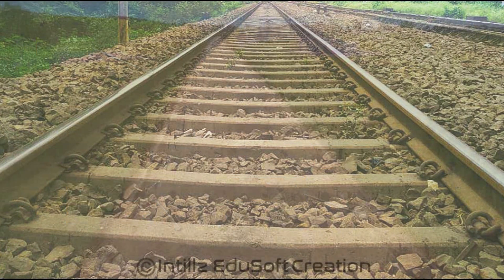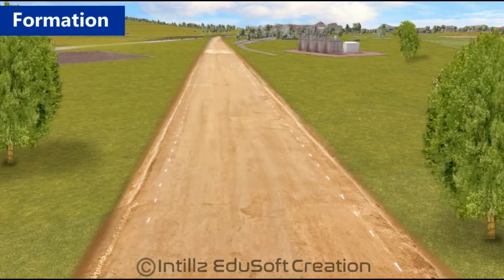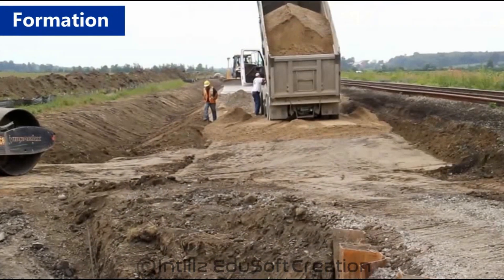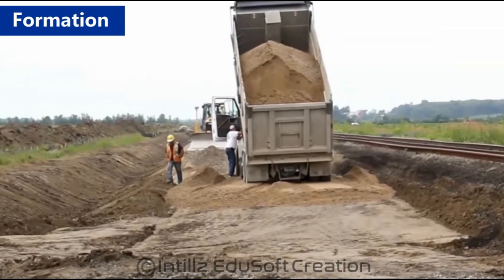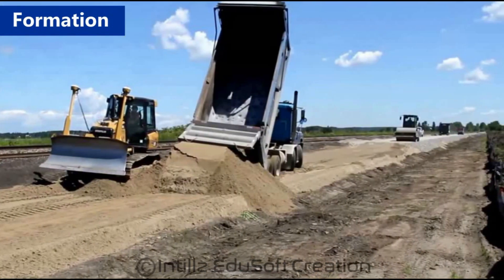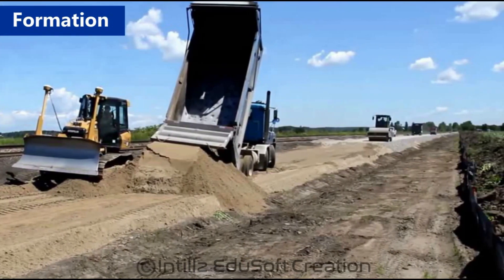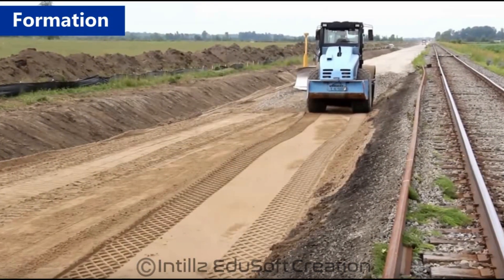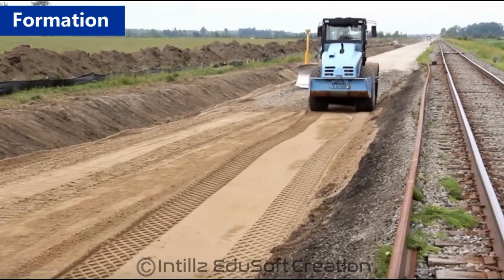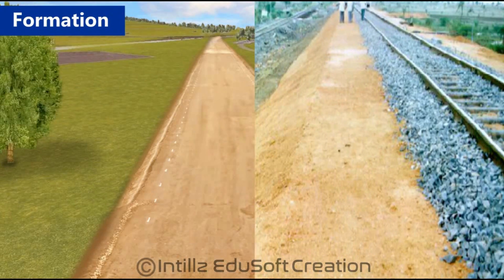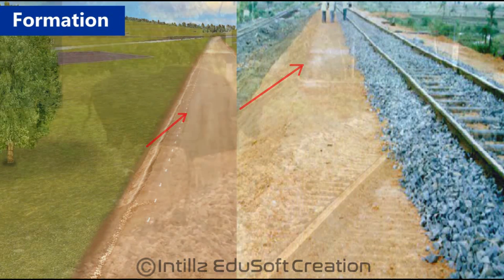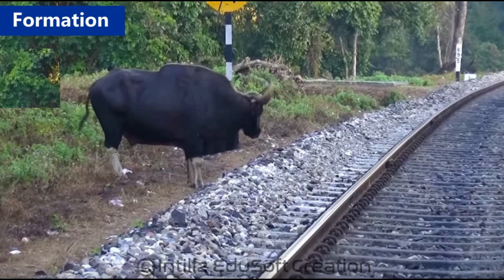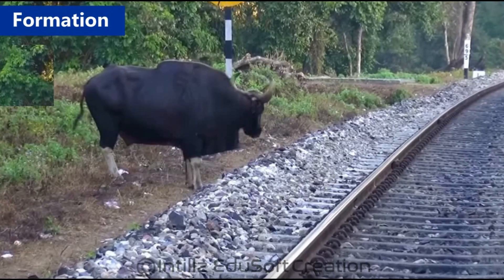The first component is the formation. The formation is the ground on which a railway track is to be laid. There should not be a sudden change in the gradient. The formation is prepared such that the ground is made level. At the same time, as far as possible, it is elevated from the natural ground. This elevation is necessary to avoid cattle crossing the railway track.